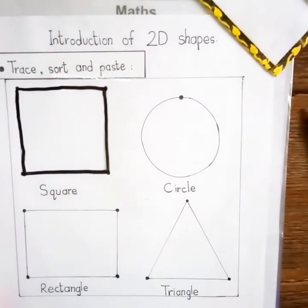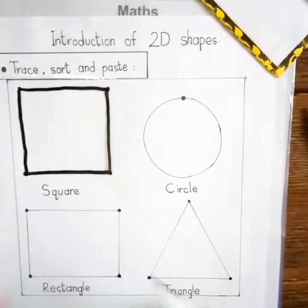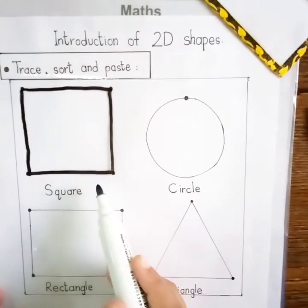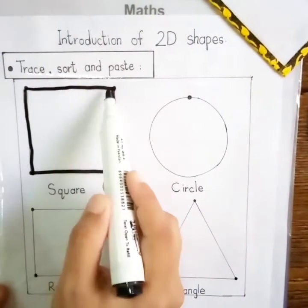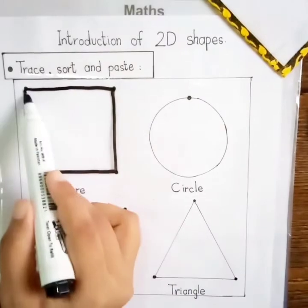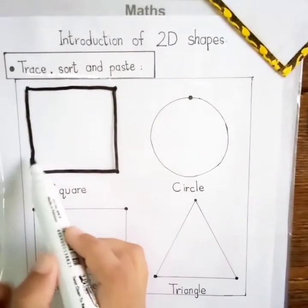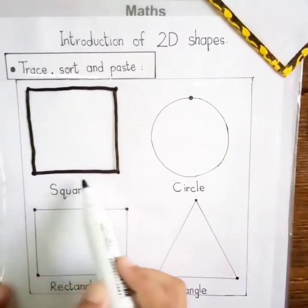Now, which shape is this? Square. Square has 4 corners and 4 sides. Okay.